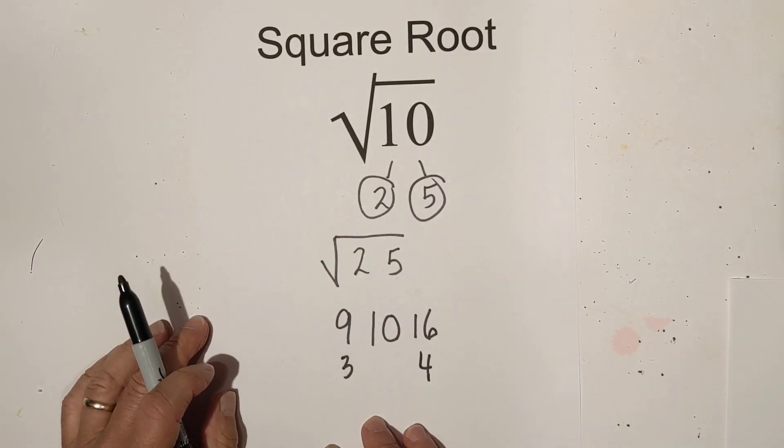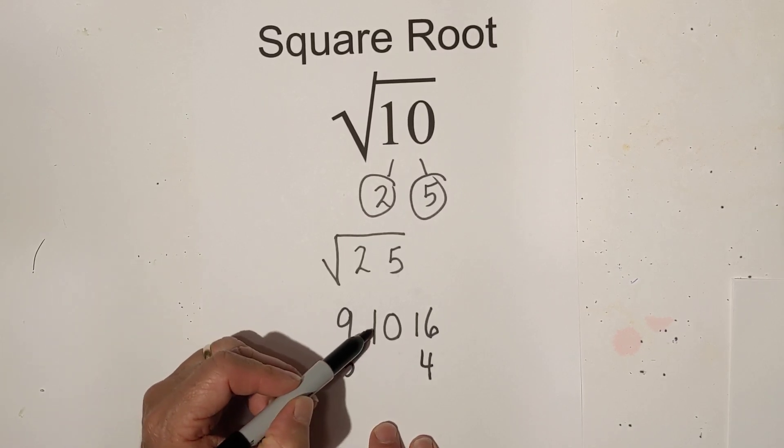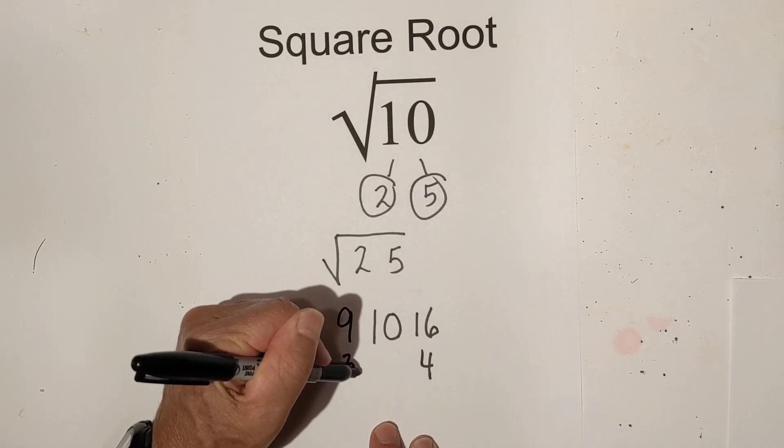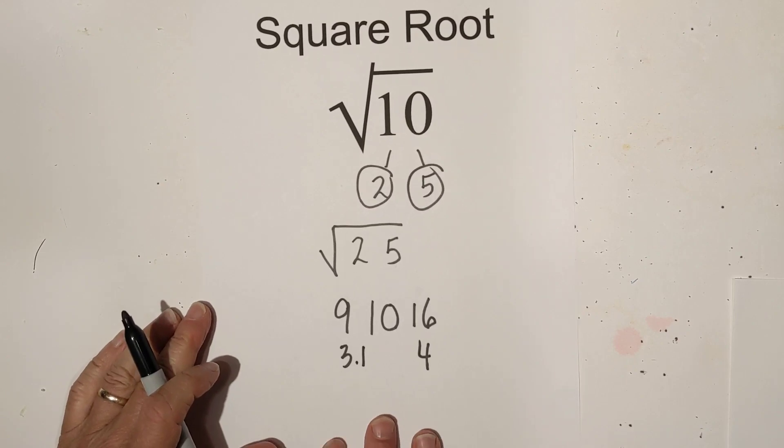So 10 is in between those so it is going to be something close to that and it is closer to the 9 than the 16 so it will probably be something like 3.1.